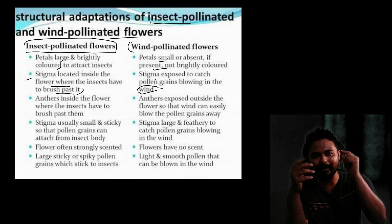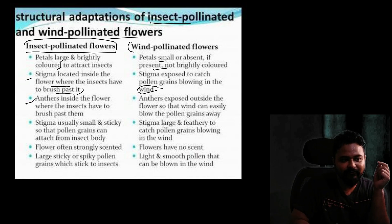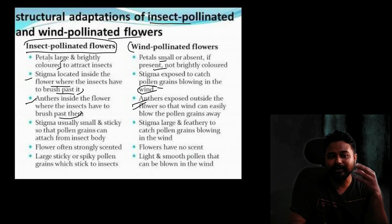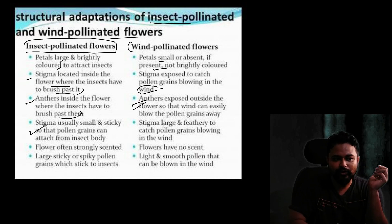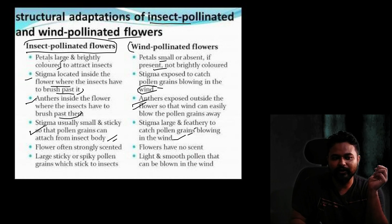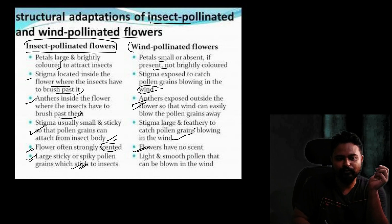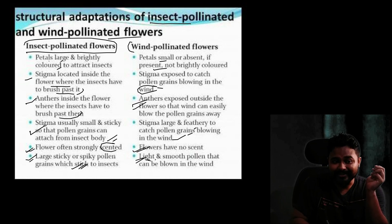When the wind blows, pollen is captured by the exposed stigma. Anthers in insect-pollinated flowers are inside the flower where insects must brush past them; in wind-pollinated flowers, anthers are exposed outside. Stigma in insect-pollinated flowers is small and sticky so pollen can attach from the insect body. Insect-pollinated flowers are often strongly scented, while wind-pollinated flowers have no scent. Pollen in insect-pollinated flowers is large, sticky, or spiky; in wind-pollinated flowers it is very light and smooth so it can be blown by the wind.